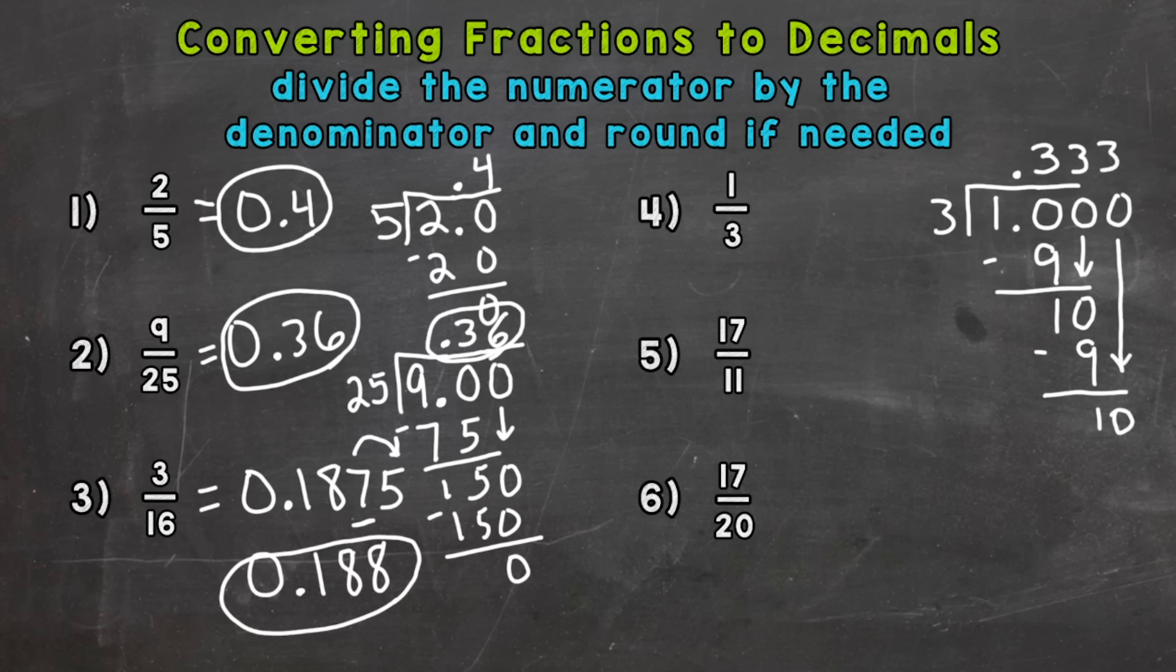3 3's out of 10. 3 times 3 is 9. Subtract a 1. And you're probably getting the point here. It's going to go on forever, so it's a repeating decimal. So our answer, this is one we would want to round. And if we round it to the thousandths, we have a 3 there. Look next door. It says stay the same. So our answer is 333 thousandths.